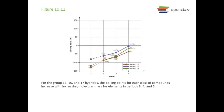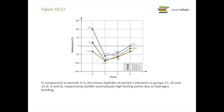If we look at groups 15, 16, and 17 hydrides, we see their boiling points increasing with increasing molecular mass in periods three, four, and five. Notice period two was left out — this is where we would predict period two would be. But in reality, the period two hydrides of fluorine, oxygen, and nitrogen — HF, H2O, and NH3 — are all the way up here with much higher boiling points.